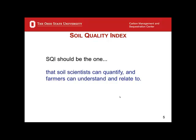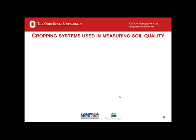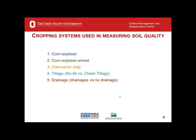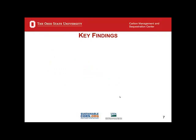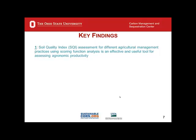That's a very important criterion of a good soil quality index — one that soil scientists can quantify but farmers can understand and relate to. In this study, based on this concept, we studied several cropping systems such as corn-soybean, corn-soybean-wheat, corn and cover crop; and tillage systems such as no-till and chisel tillage; and drainage systems such as drainage versus no drainage. To summarize the key findings of this work, including those of several colleagues I mentioned: number one, a soil quality index assessment for different agricultural management practices using scoring function analysis is an effective and useful tool for assessing agronomic productivity.